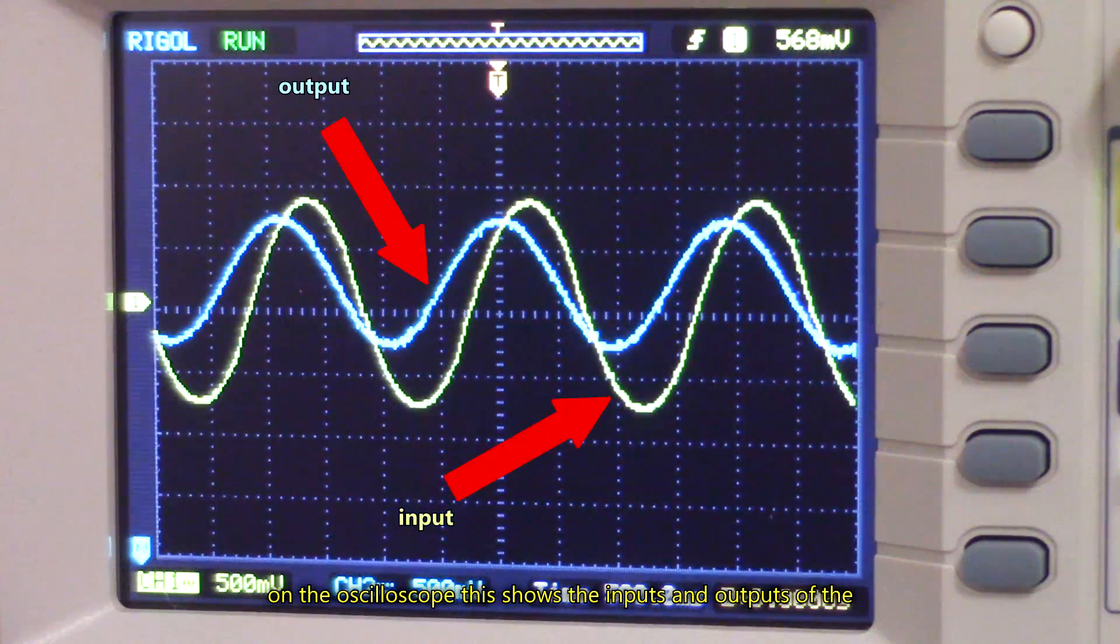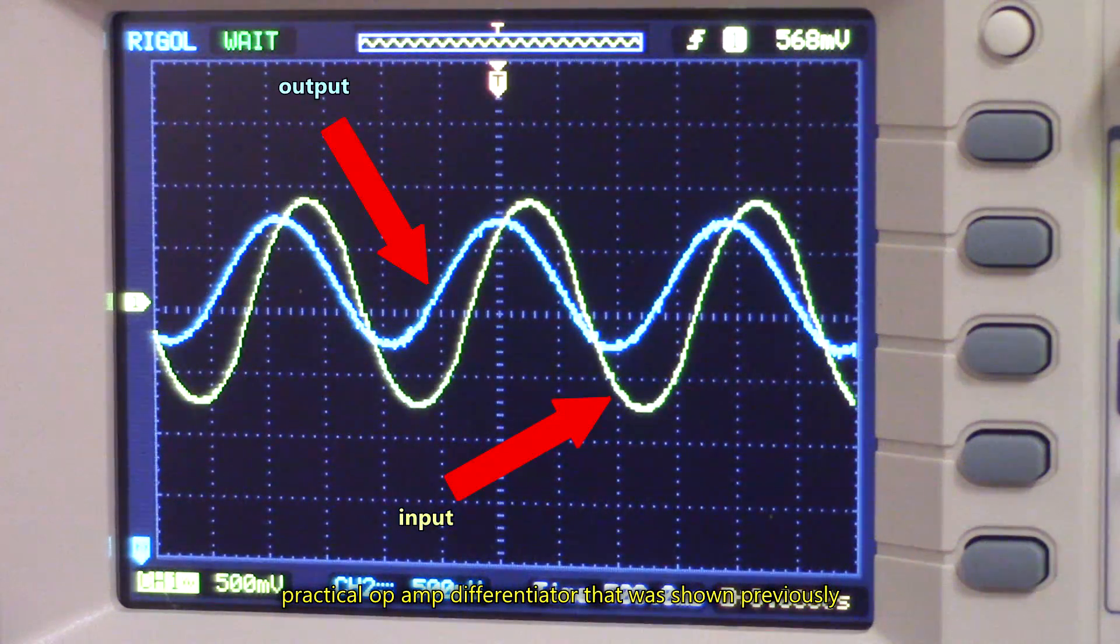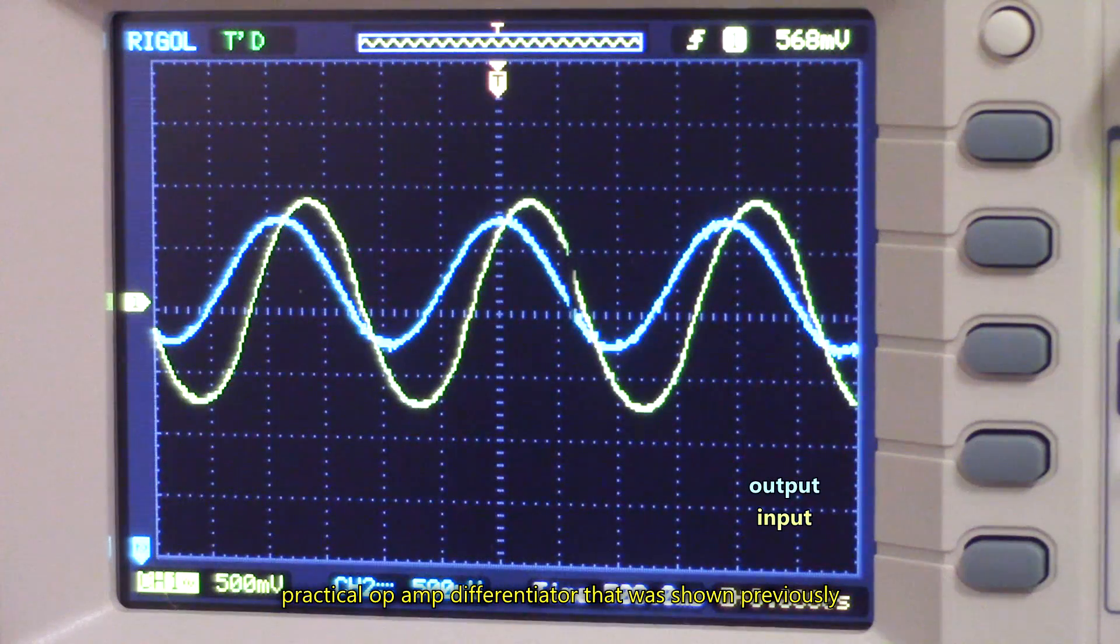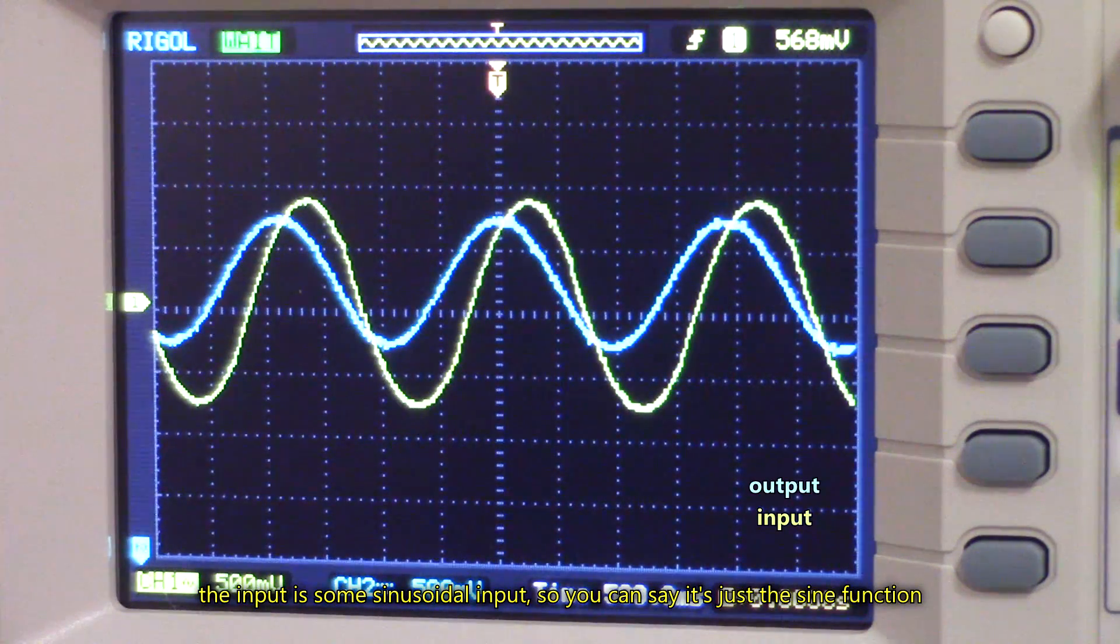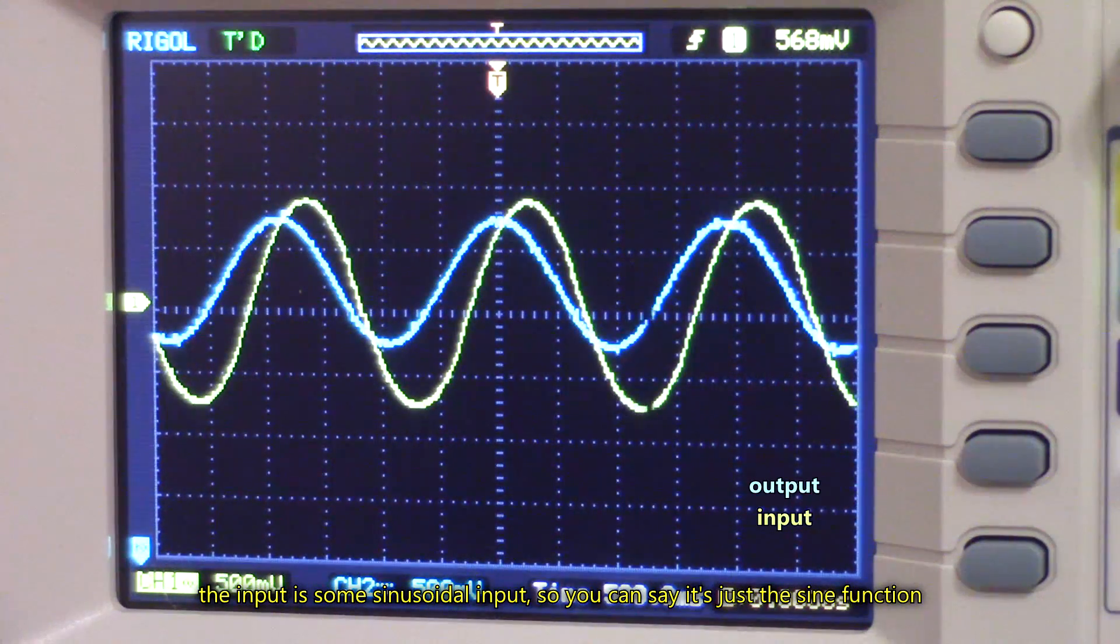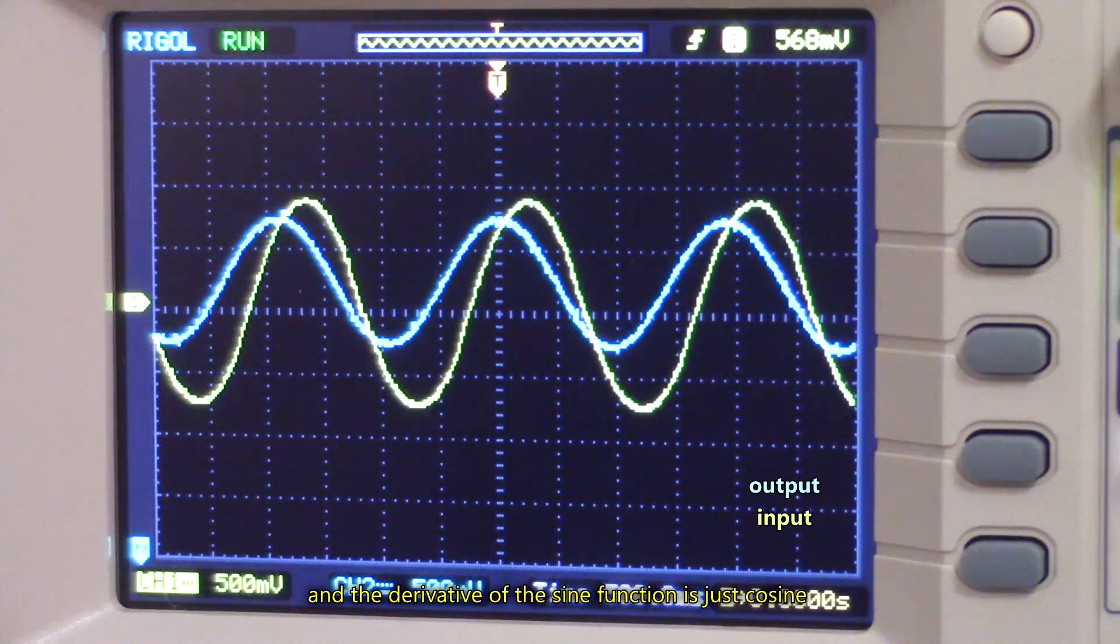On the oscilloscope, this shows the inputs and outputs of the practical op-amp differentiator that was shown previously. The input is some sinusoidal input. So we could say it's just the sine function and the derivative of the sine function is just cosine.